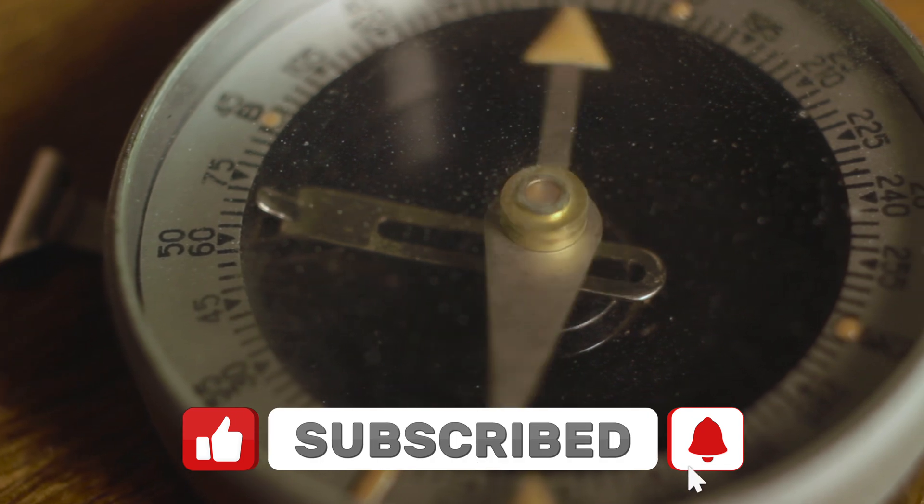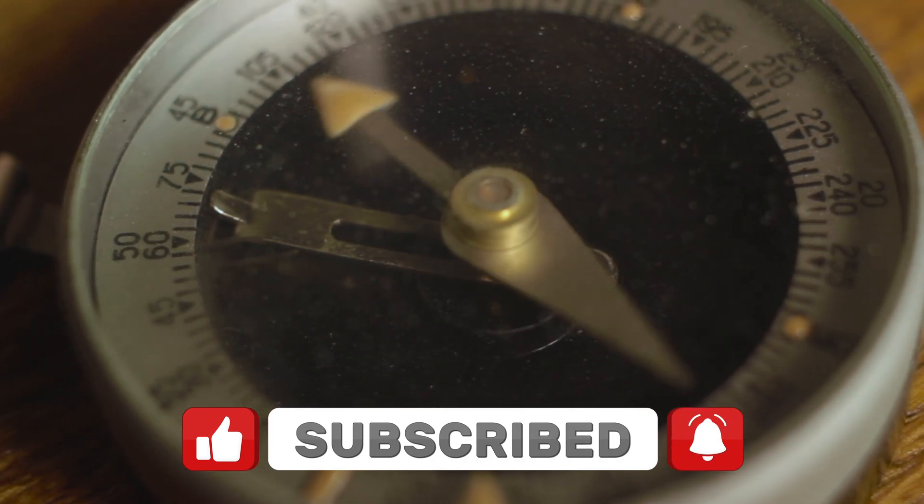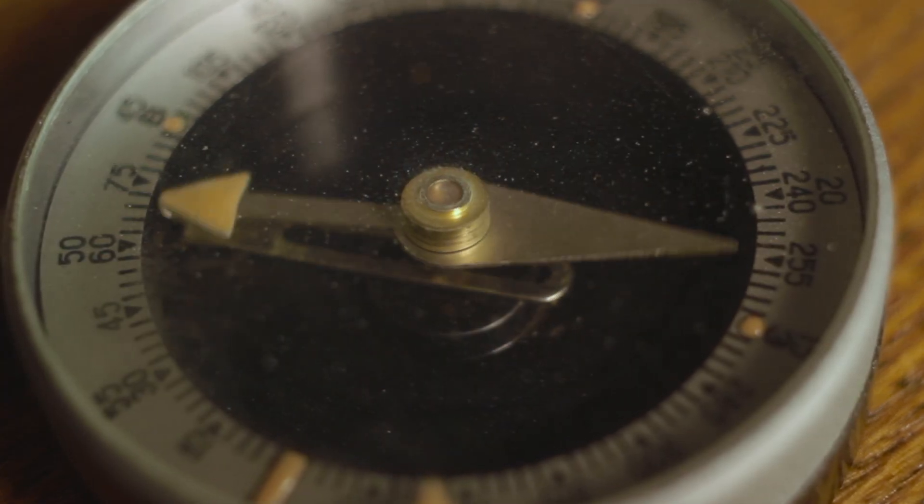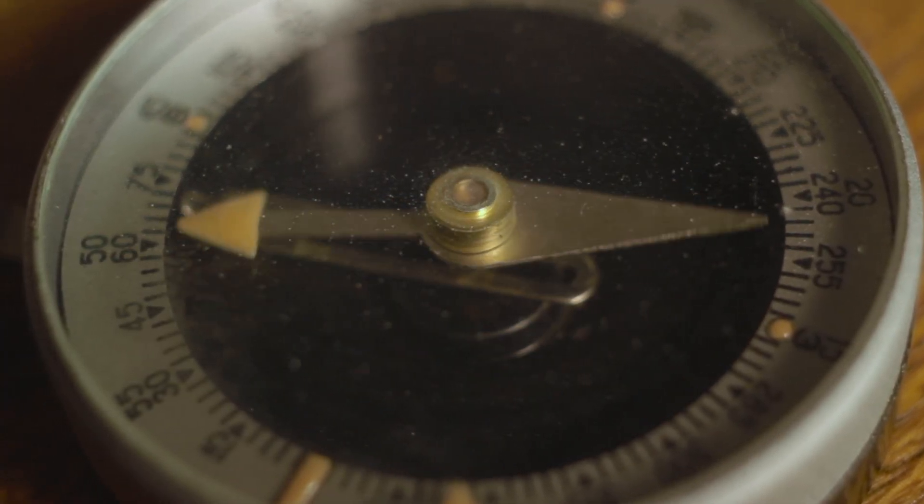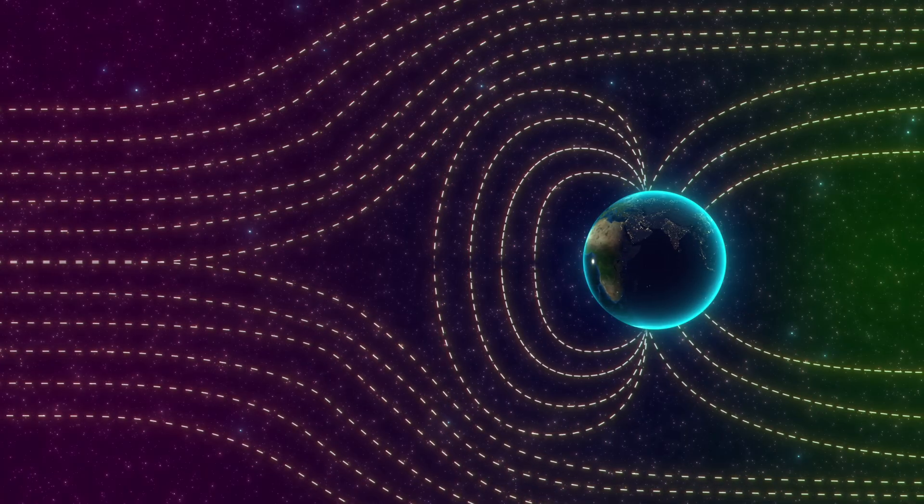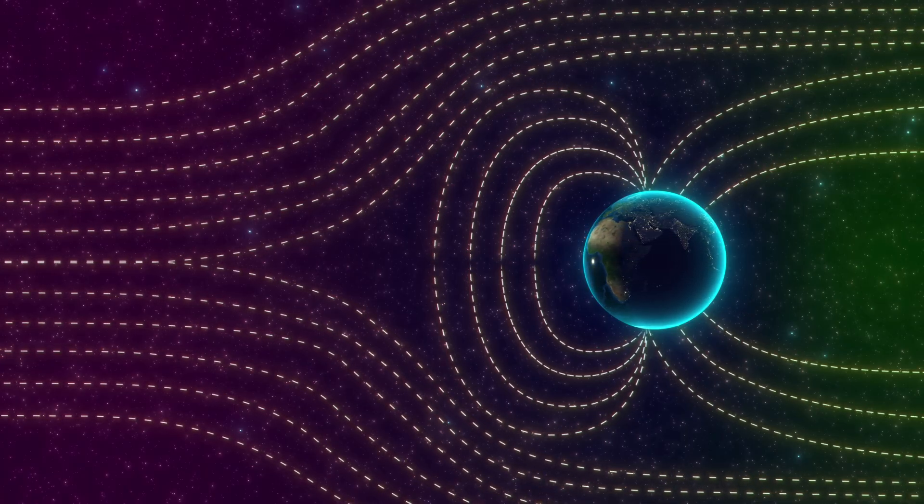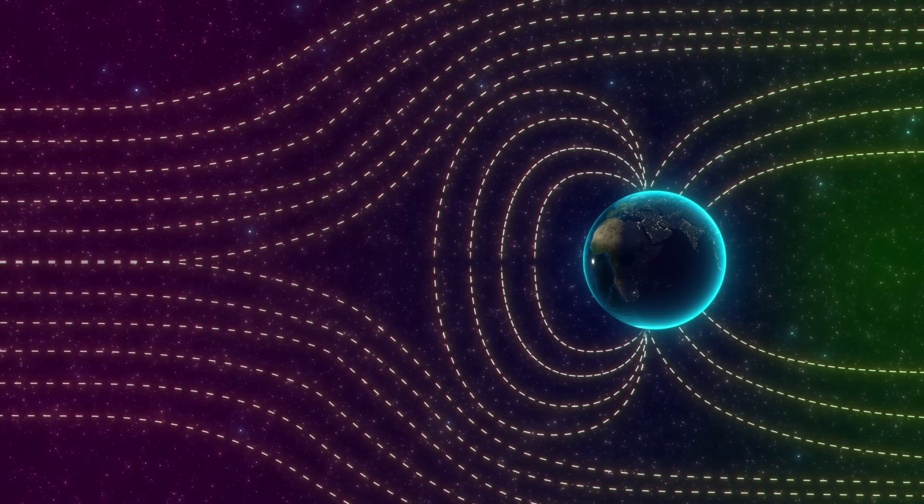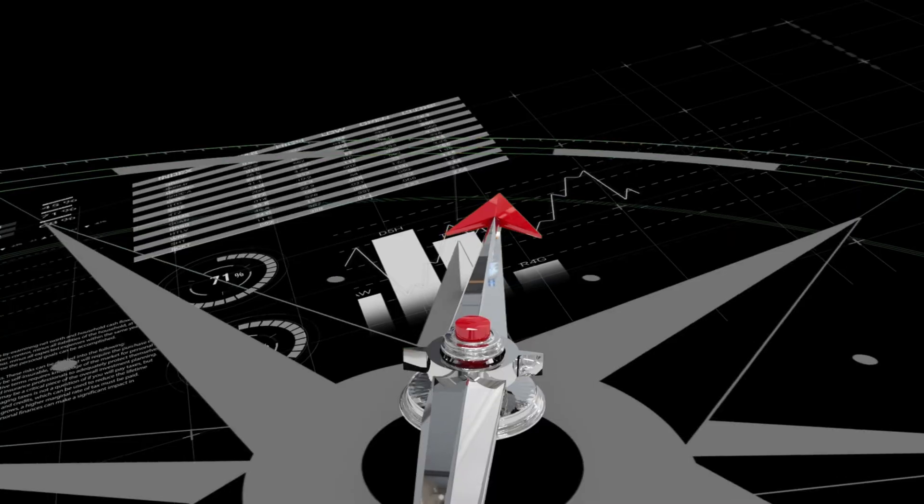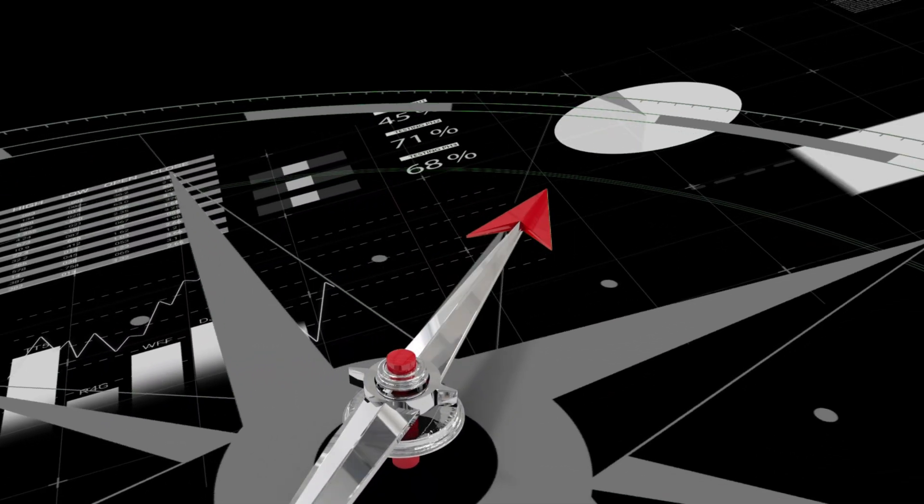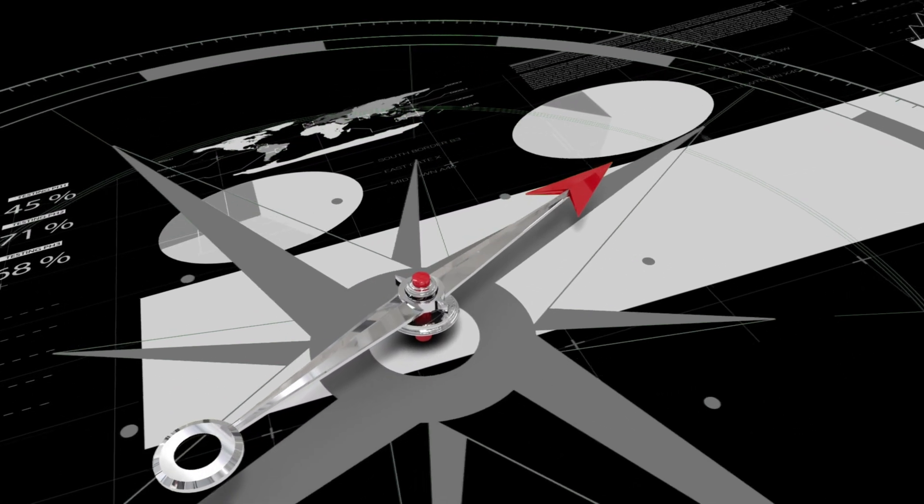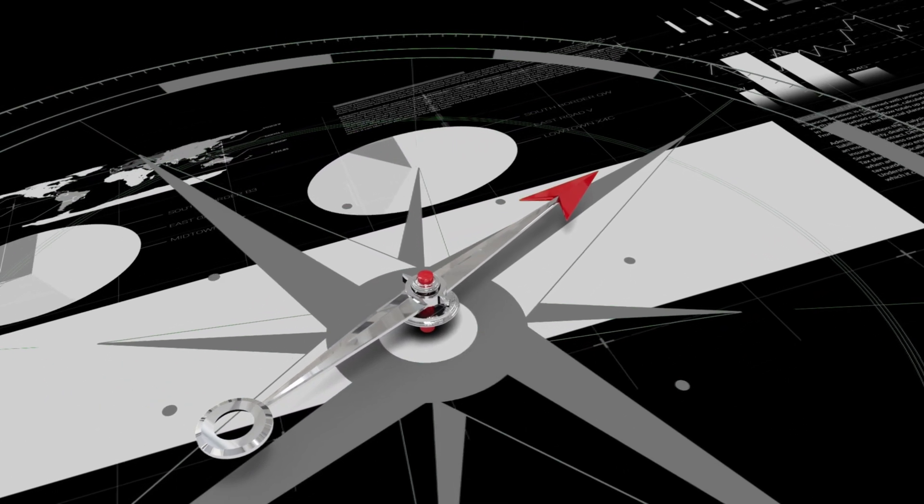Inside your trusty compass is a little needle that acts like a miniature superhero, always pointing north, but not because it's trying to ruin your hiking trip. It's because of Earth's magnetic field. Our planet is like a giant bar magnet with a north and south pole, though it's a bit wonky since the magnetic poles aren't perfectly aligned with the geographic poles. Still, that invisible force field wraps around the Earth and influences everything magnetic, including your compass needle.